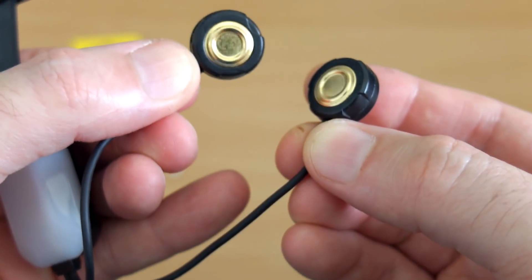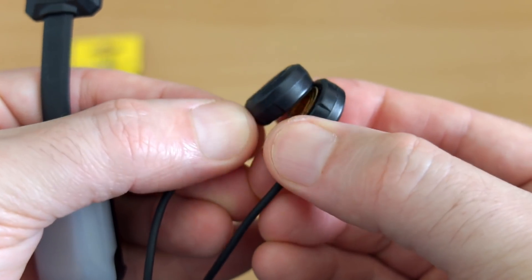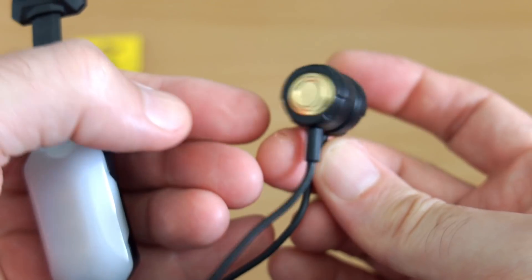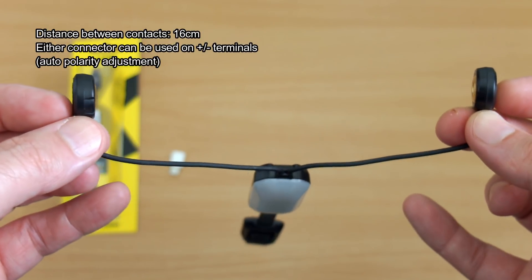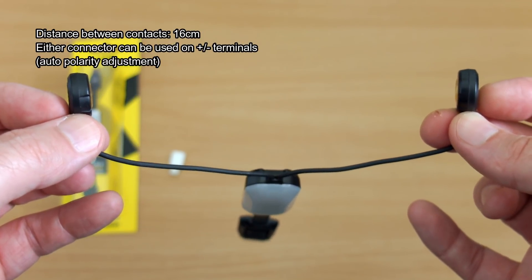Gold plated contacts and the magnets are about the same strength as the Olight magnetic charger, so in other words you shouldn't have any problems at least with flat top cells. Around about 16 centimeters between the two contacts fully extended.